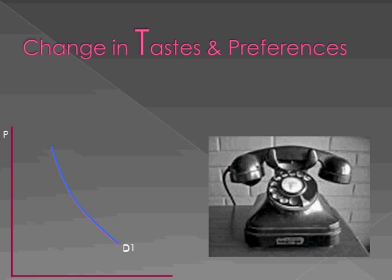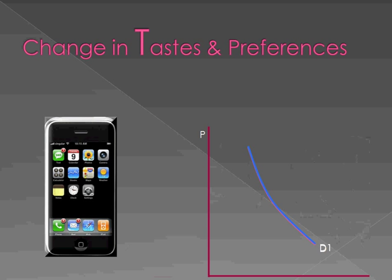If we have a change in taste and preferences, that is a direct relationship with demand. If taste and preferences decrease for a good, like old phones, we'll actually see a decrease in demand — a shift to the left. If we have an increase in taste and preferences, like everyone wants the new iPhone, we would see an increase in demand and demand would shift to the right. A right shift is an increase, a left shift is a decrease in demand.